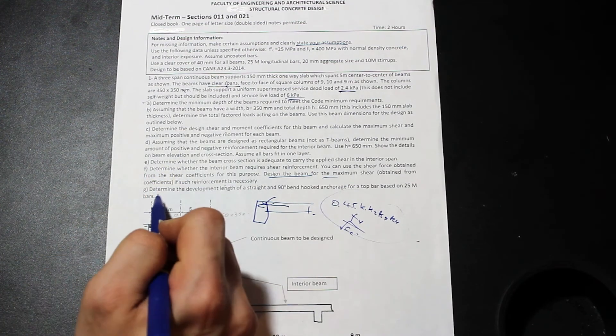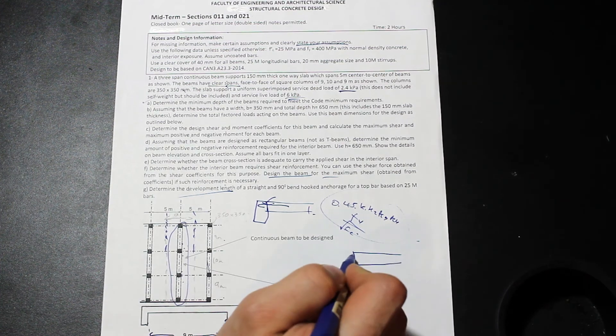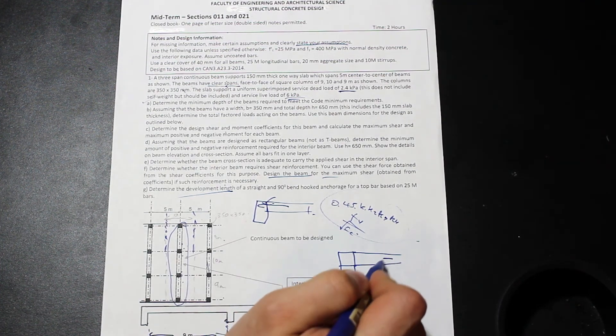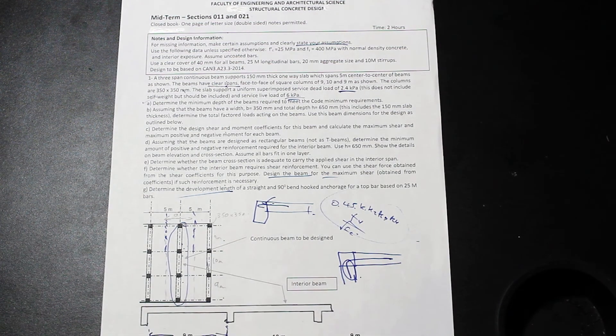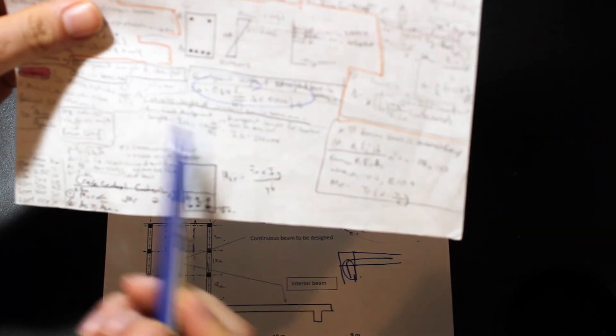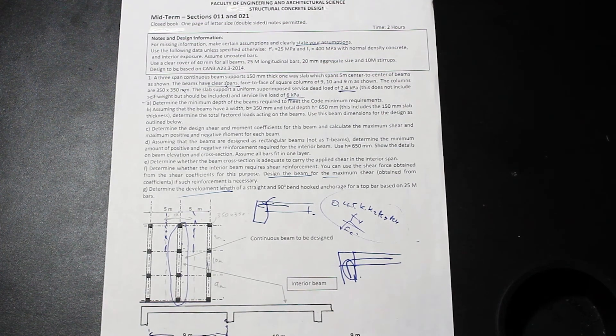Finally, and we're asked about the development length. So the development length, essentially, is when we have, when we're developing bars, for example, like this. This is our column, okay? We need to find out, maybe, the development length, either of a hooked or a straight bar. And that's also in the code. I don't know if you can see it here, but we have some requirements in the code. And I'm not going to go over that. I wanted to show you guys, kind of, walk you through an exam.